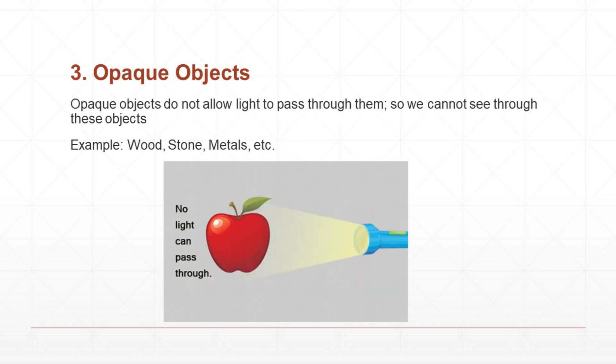Then we learn about opaque objects. Opaque objects do not allow light to pass through them, so we cannot see through these objects. Examples: wood, stone, metals, etc. Looking at the picture, a torch light is applied on an apple, and no light passes through it because opaque objects do not allow light to pass through them.